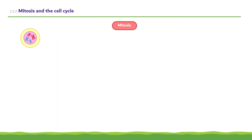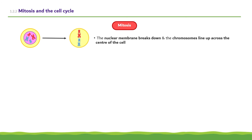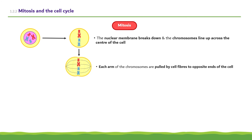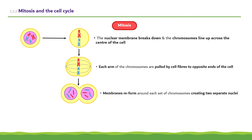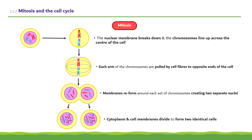After cell growth and DNA replication has occurred, mitosis takes place. First, the nuclear membrane breaks down and the chromosomes line up across the centre of the cell. Then, each arm of the chromosomes are pulled by cell fibres to opposite ends of the cell. Membranes then reform around each set of chromosomes, creating two separate nuclei. Finally, the cytoplasm and cell membranes divide to form two identical cells.